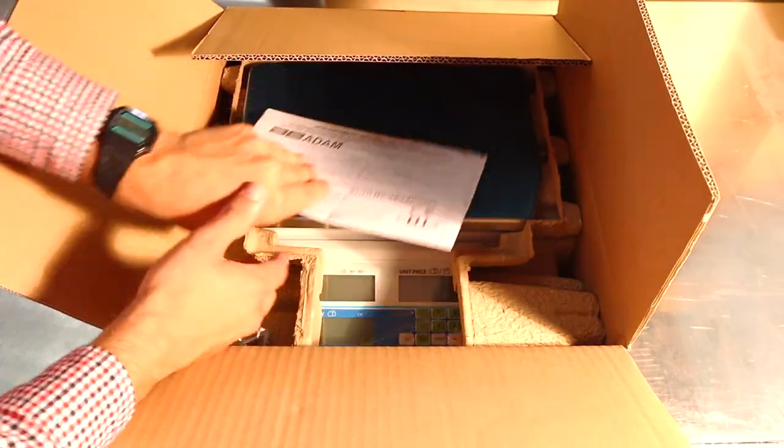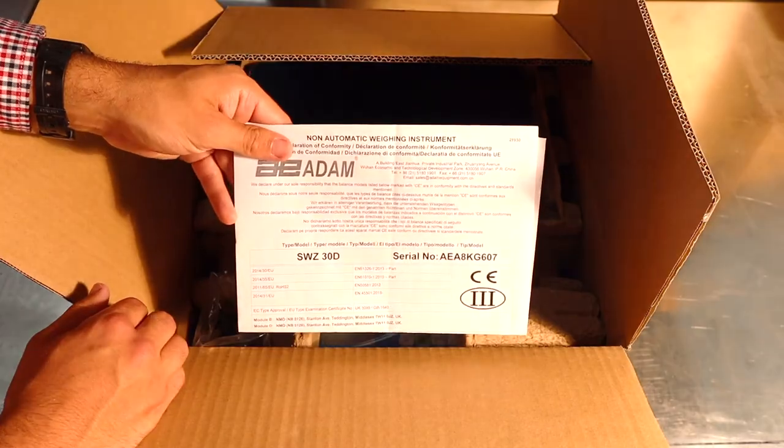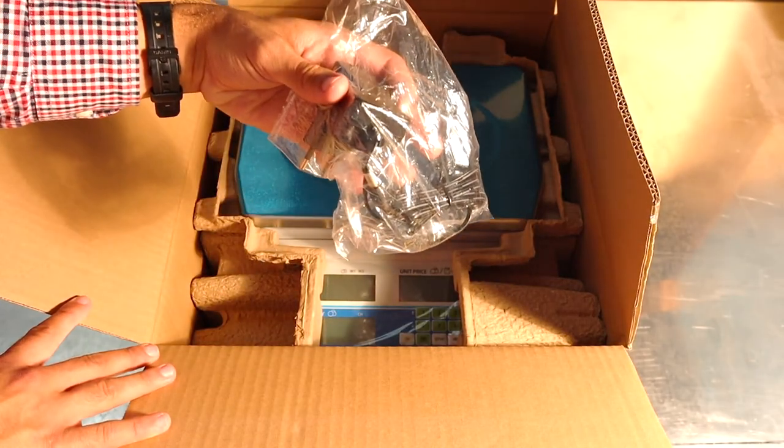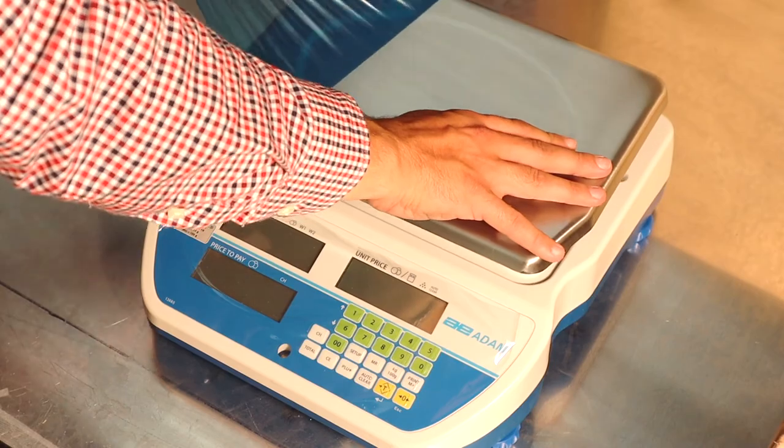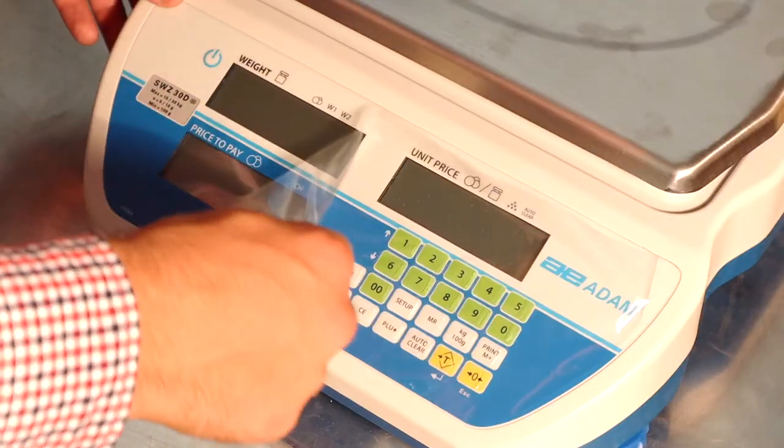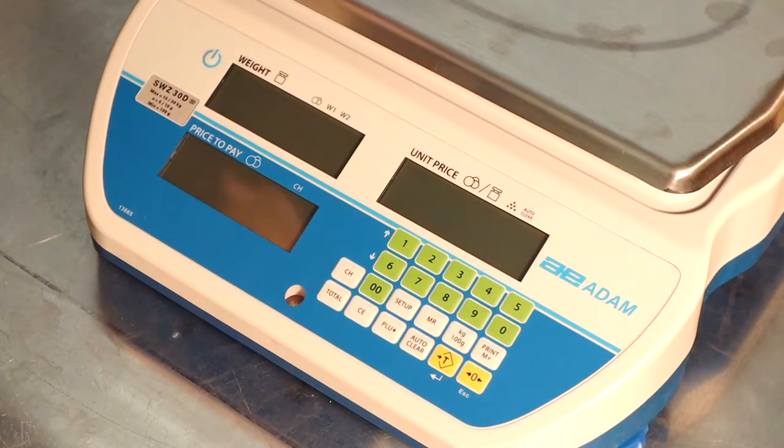When you receive your Swift, unbox it carefully, putting aside the CD user manual, documents, and the scale's charger for when you need them. The blue protective film can be removed from the pan, as well as the film from the keypad and rear displays.